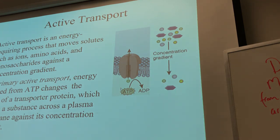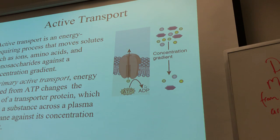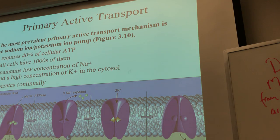With active transport, we can pump against the concentration gradient. The concentration gradient for sodium is very high on the outside and very low on the inside — yet we still want to pump it out. For that to happen, we have to put energy in. It requires about 40% of your cellular ATP — which is crazy — and you're going against the concentration gradient for both sodium and potassium.